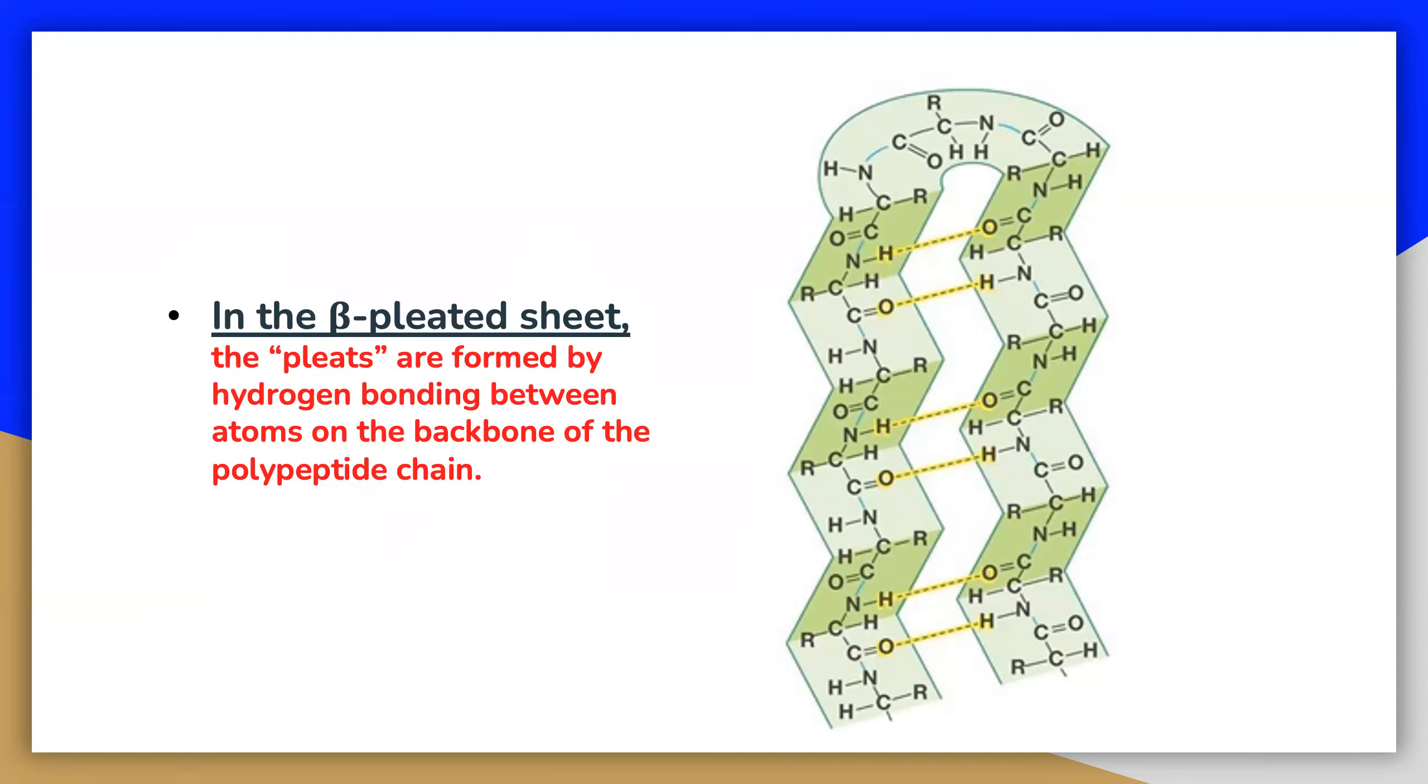In the beta pleated sheet, the pleats are formed by hydrogen bonding between atoms on the backbone of the polypeptide chain. Higher-order beta strand structures are sometimes called super-secondary structures since they involve interactions between amino acids not close in primary sequence.